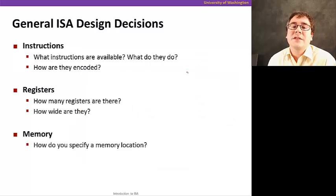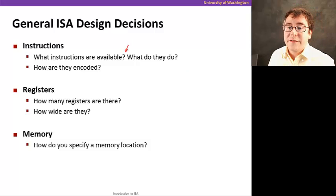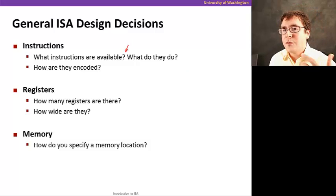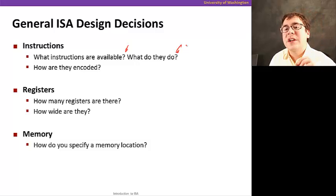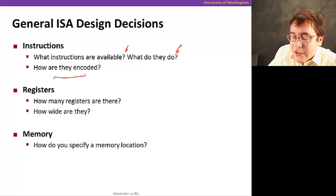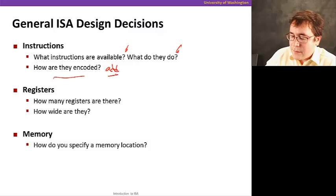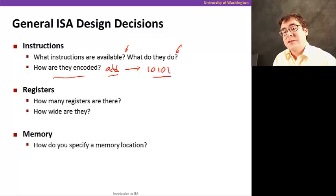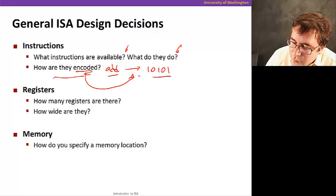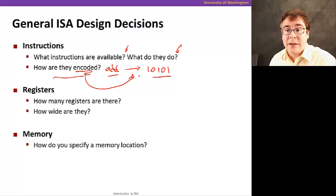The ISA also defines the instructions that the CPU can execute at the most basic level — very simple instructions like add, subtraction, or a load from memory that gets data from memory into a register. And the ISA defines what exactly happens when these instructions are executed, because when one of these basic instructions is executed, it changes the state of your computer system. Here are the major decisions when designing an ISA: what instructions are available, what they do exactly, and how they are encoded — the mapping between the instruction and the actual bit sequence.